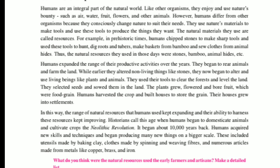Historians call this age, when humans began to domesticate animals and cultivate crops, the Neolithic Revolution. It began about 10,000 years ago. Humans acquired new skills and techniques and began producing many new things on a bigger scale, including utensils made by baking clay, clothes made by spinning and weaving fibers, and articles made from metals like copper, brass, and iron.